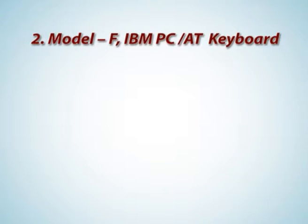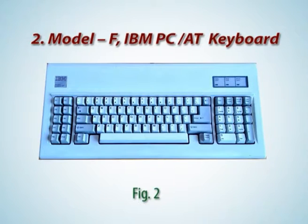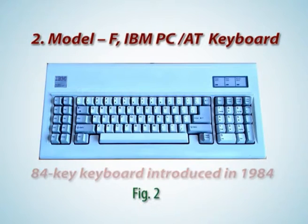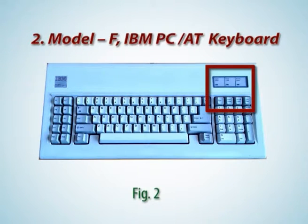Two: Model F IBM PC 80 keyboard. Figure 2 shows its image. It was an 84-key keyboard introduced in 1984. It had an additional key called SYSREQ or system request, and 3 indicator LEDs. These two keyboards were not compatible due to differences in their internal controller design.